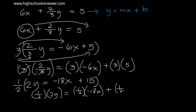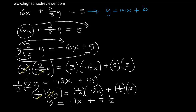2 divided by 2 equals 1, so y remains. 1 half times negative 18x equals negative 9x, since negative 18 divided by 2 is negative 9. And 15 over 2 equals 7 and 1 half. Therefore y equals negative 9x plus 7 and 1 half, which is of the form y equals mx plus b. This is now our final answer.